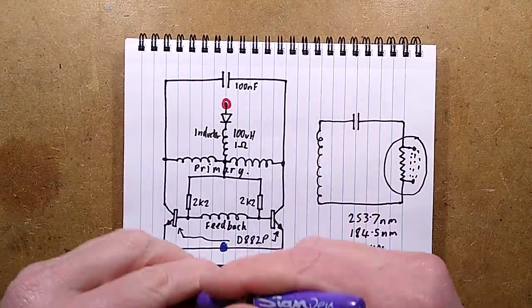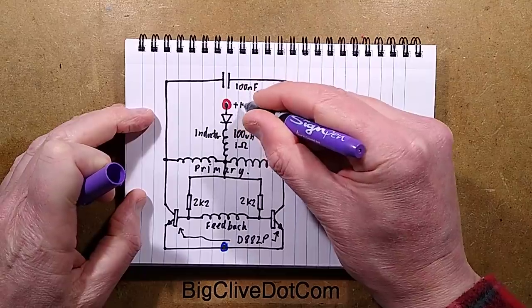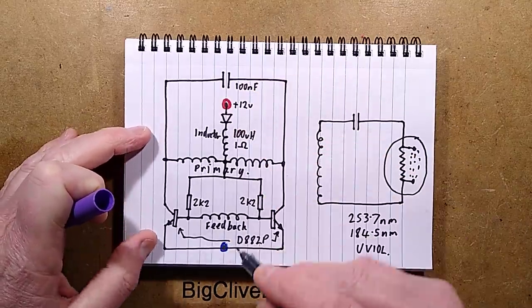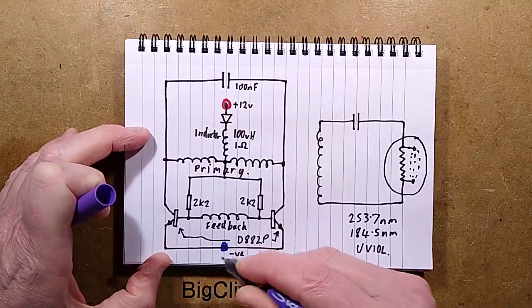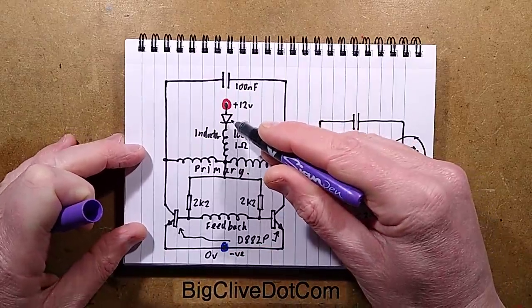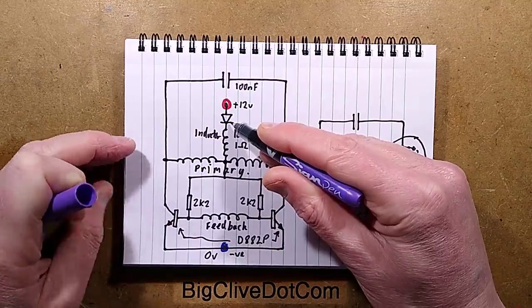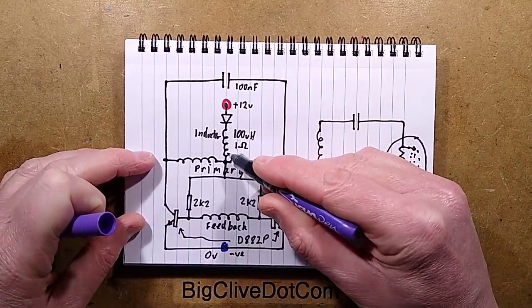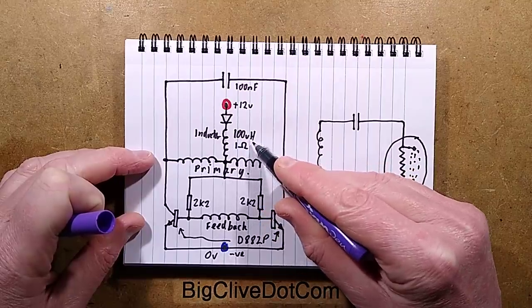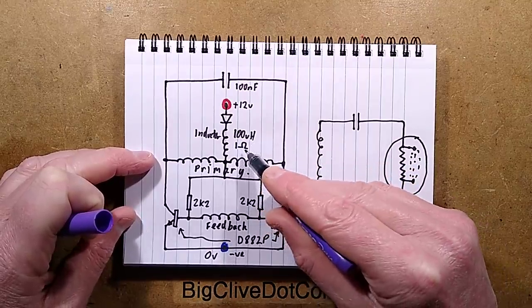There's the incoming positive supply, plus 12 volts, and there is the negative supply or zero volts. It goes via this diode, which I think is a 1N4007 - just a standard value.